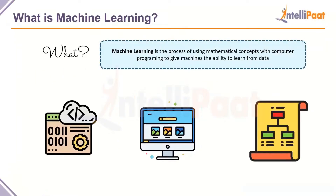Machine learning is the process of using mathematical concepts with computer programming to give machines the ability to learn from data. One of the most important aspects of today's digital world is that data is being created at a rapid pace — by every click we make, by scrolling through our feed, by clicking on products, or simply by existing. Machine learning takes that data and turns it into useful information, such as understanding our likes and dislikes for better product recommendations.